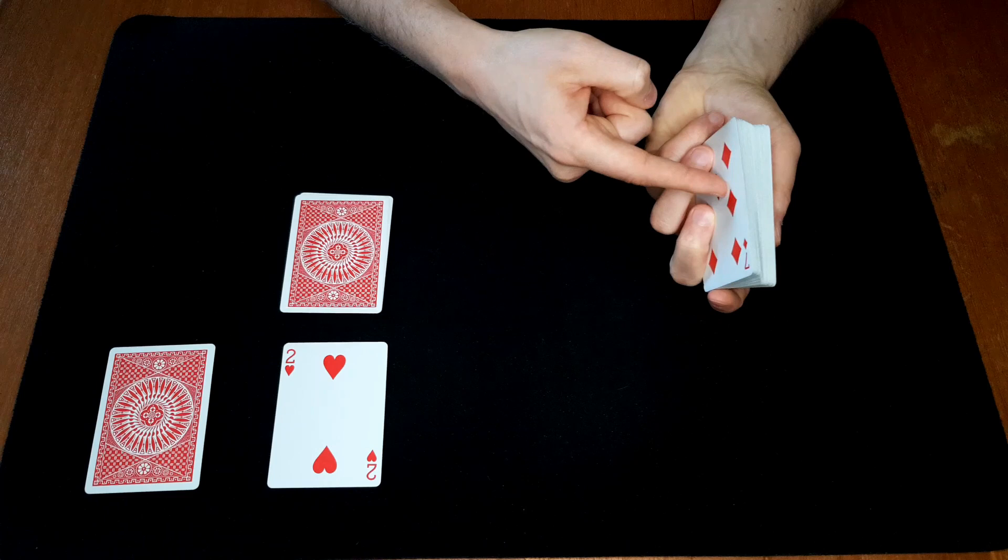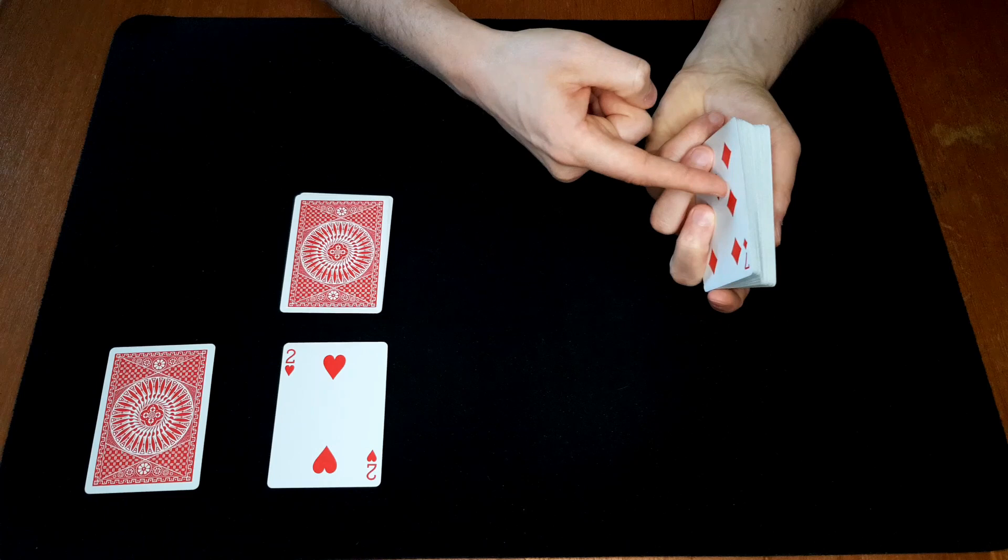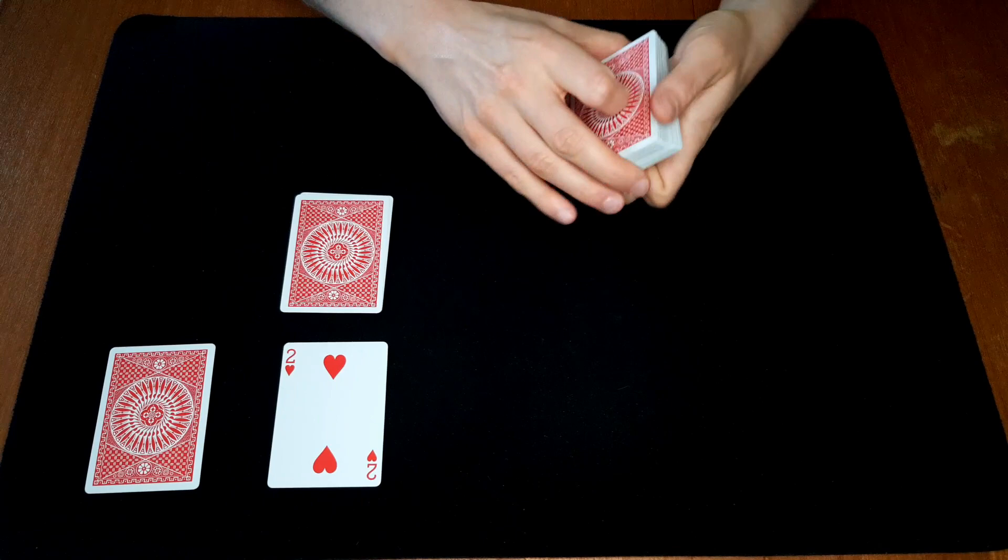So now we have these two sevens here and we can shuffle that seven up to the top. We hold back this seven with these fingers and we shuffle up this next seven to the top just like that.